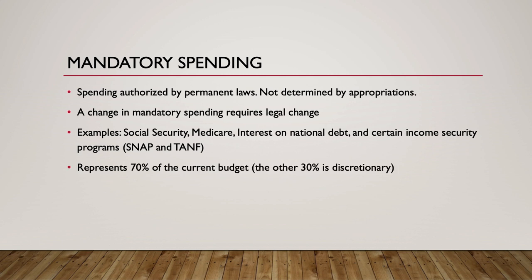The overwhelming majority of federal spending consists of mandatory spending. Specifically, almost 70% of the current budget is mandatory spending. Legislation determines eligibility criteria for recipients, and the government funds all who are eligible regardless of the annual cost to the Treasury.